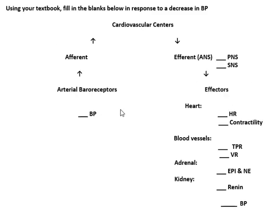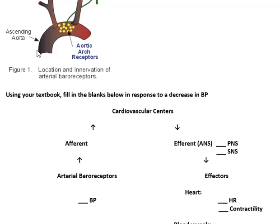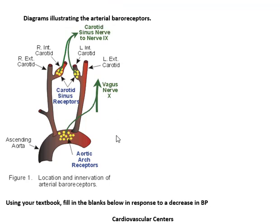Go through the lab manual page by page, filling in the blanks. Your textbook should have the relevant diagrams explaining what's happening and discussing sympathetic, parasympathetic, the vagus nerve, and the glossopharyngeal nerve — the ninth cranial nerve — which is triggered by baroreceptors in the carotids.